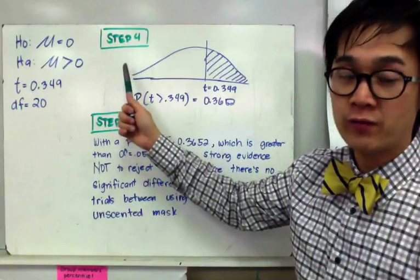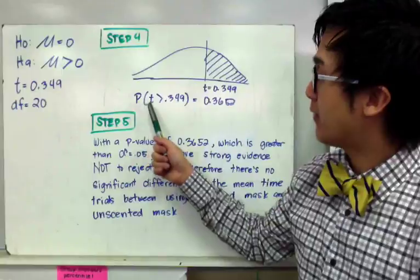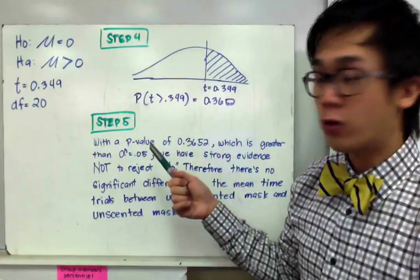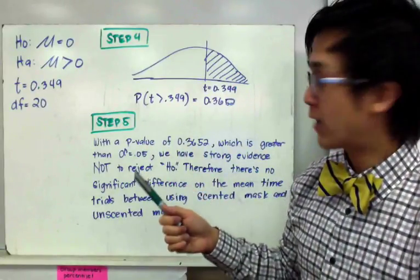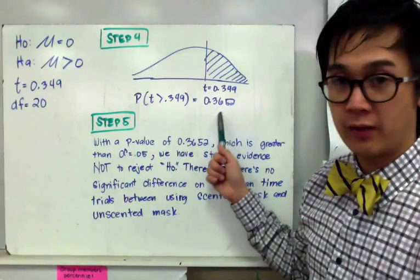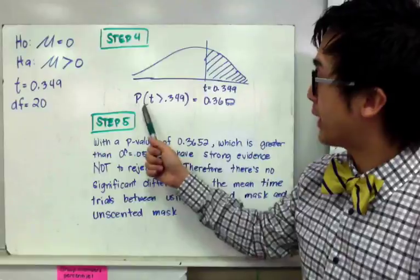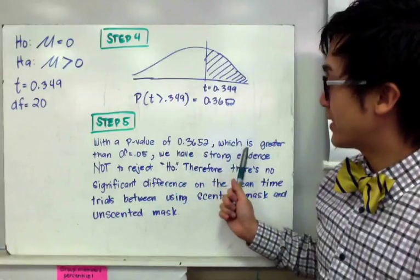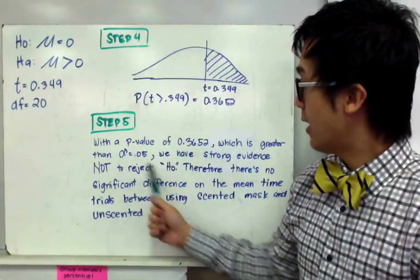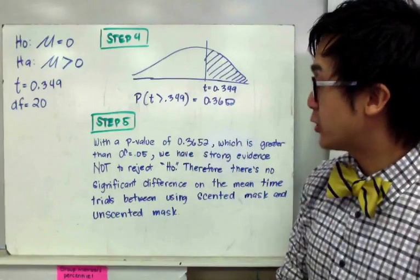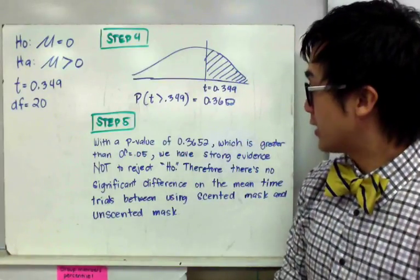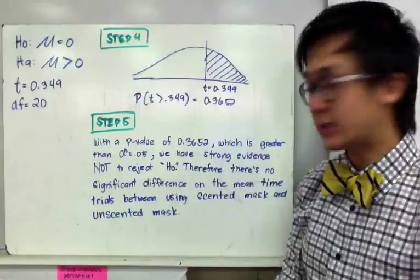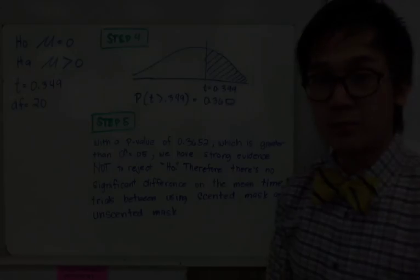For step four, finding the p-value, we need P(t > 0.349). Using your calculator or t-table, this gives us 0.3652. In our conclusion, with a p-value of 0.3652, which is greater than α = 0.05, we have strong evidence not to reject the null hypothesis. Therefore, there's no significant difference on the mean time trials between using the scented or unscented mask.